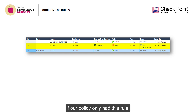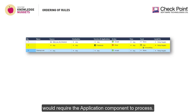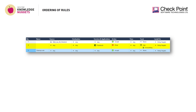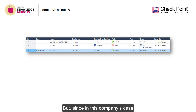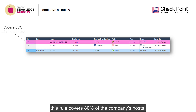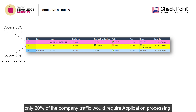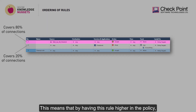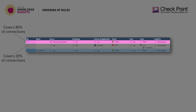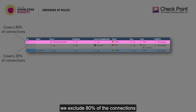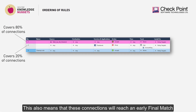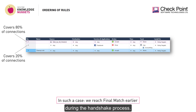If our policy only had this rule, then 100% of the company's traffic would require the application component to process. But since in this company's case this rule covers 80% of the company's hosts, only 20% of the company's traffic would require application processing. This means that by having this rule higher in your policy, we exclude 80% of the connections from being processed by an irrelevant component. These connections will also reach an early final match during the handshake process.